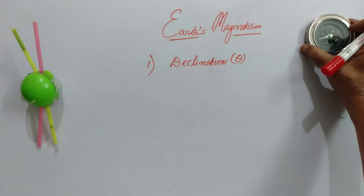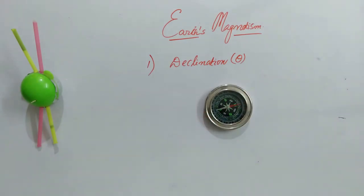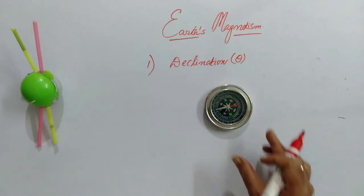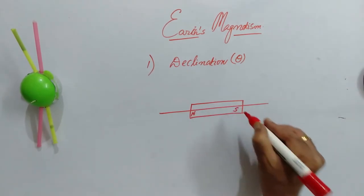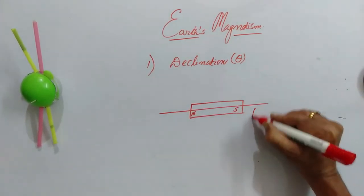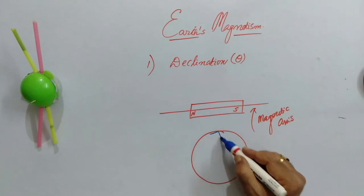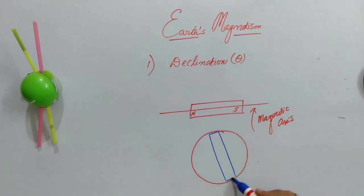Normally, when we keep a compass needle or when we suspend any magnet, it comes to rest in the north-south direction. But in fact, it does not exactly come to rest in the north-south direction — it makes a certain angle. The line joining the north and south poles is called the magnetic axis. Earth is a giant magnet, and if you imagine a pseudo-magnet inside the earth, it will also have north and south poles.